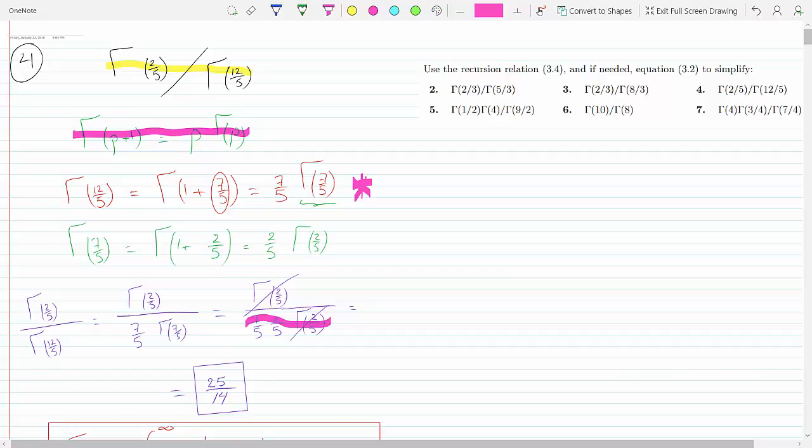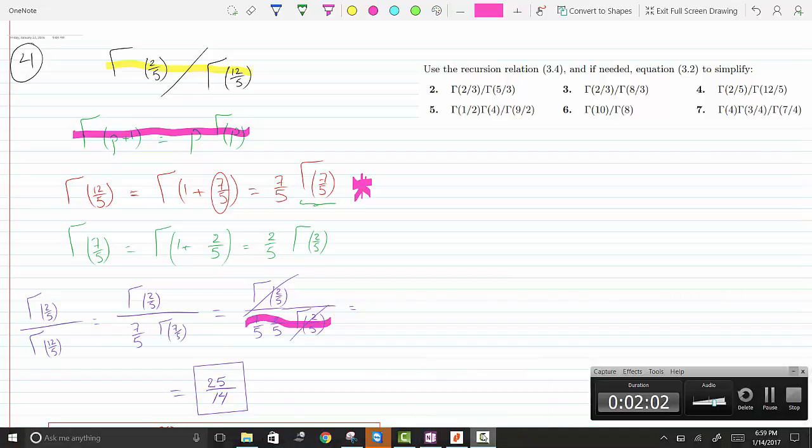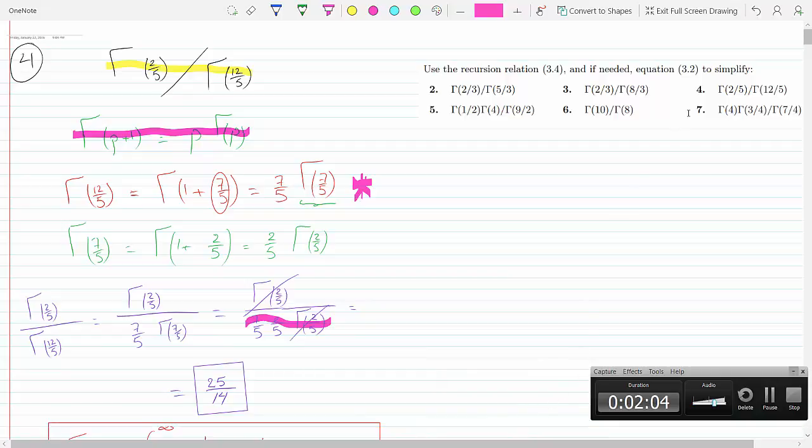And so that concludes this question. This was number 4 in chapter 11, section 3, problem number 4: gamma 2/5, gamma function of 2/5 divided by gamma function of 12/5.